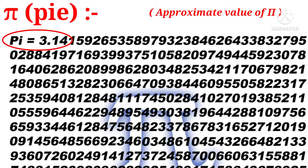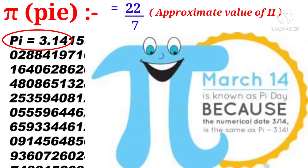When the number 22 is divided by 7, it also gives approximately 3.14 as the quotient. So from that day, pi is treated as 22/7 as an approximate value. March 14 is treated as World Pi Day — the integer 3 indicates March and the decimal digits 14 indicate the date. It is also the birthday of the famous scientist Albert Einstein.